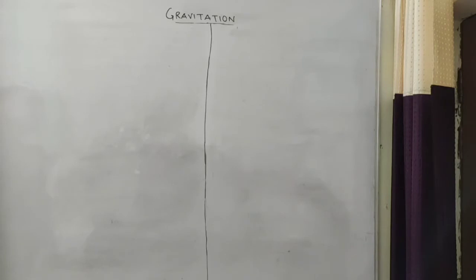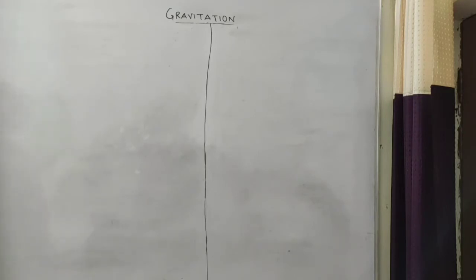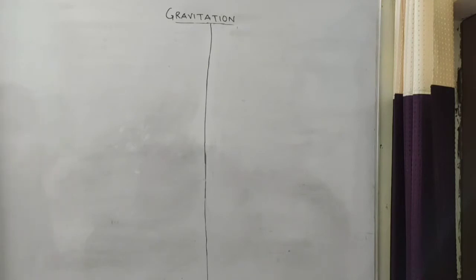Now we have to go for gravitational potential energy and then we will go to Kepler's laws — these are the two topics left in the first unit of gravitation. There are two units in gravitation: the first unit is regarding general introduction and derivations, like various terms. Then we will go to satellites, escape velocity, orbital velocity, etc., in gravitation part 2.